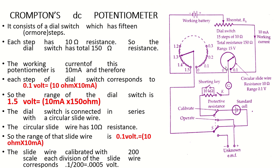This small circular slide wire is divided into 200 small divisions. The voltage of each small division is 0.1 divided by 200 = 0.0005 volt. That is the voltage of each small division in the circular slide wire.